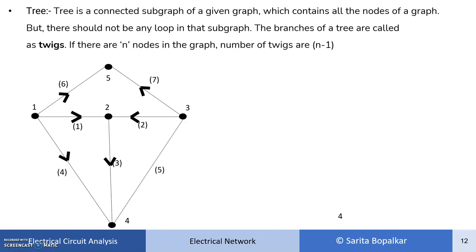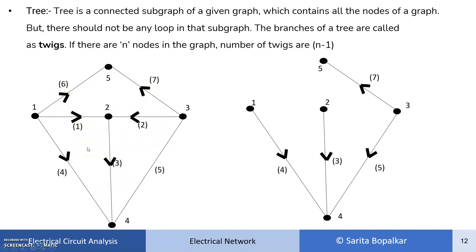Let's see how to draw a tree. We will take the same example as in the previous video — this is the graph of one of the networks. For this graph, there can be different numbers of trees. Our conditions are: we have to include all nodes — node 1, 2, 3, 4, and 5 — these nodes should be connected, and there should not be any loop. So this is one possible tree; you can draw another tree of this graph as well.